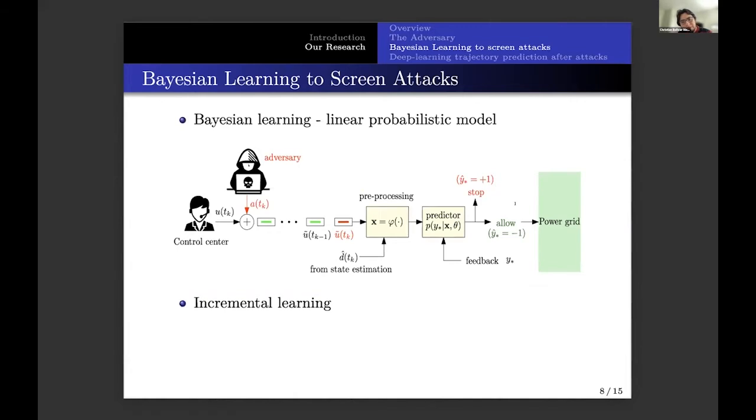So, in our work, we developed a Bayesian learning method that does exactly this. This essentially predicts whether these commands, this manipulation of the generation, will disrupt or not the power grid. And if it will disrupt, we're going to stop it. We're going to stop that command. But if the command is safe, or it's not going to disrupt the power grid, we're going to allow it.